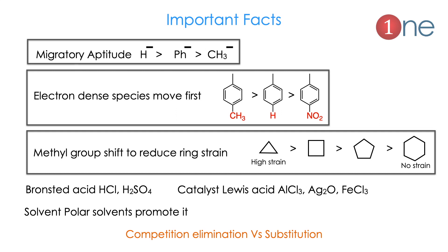Important facts to know: migratory aptitude means which group will move faster. Hydrogen moves most easily, then phenyl, then methyl — all due to the stability of those groups. Electron-rich species migrate first since a cation is involved. Ring strain also plays a role: smaller rings have higher strain, so the ring will open and methylene shift happens. Cyclopropane has higher strain, cyclopentane less, cyclohexane is most stable. The catalyst can be a Brønsted acid like HCl or H2SO4, or a Lewis acid like AlCl3, AgO, or FeCl3. Polar solvents promote the reaction. Competition between elimination and substitution reactions is also important to know.